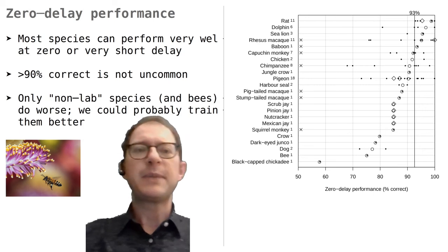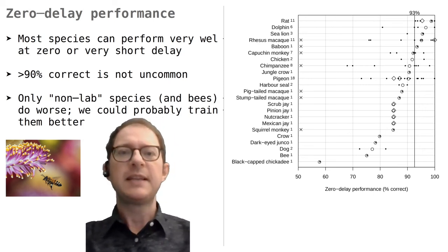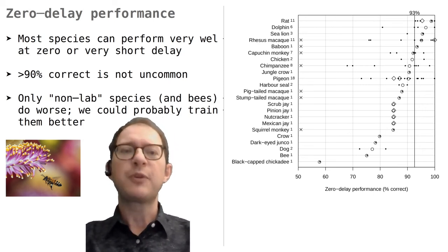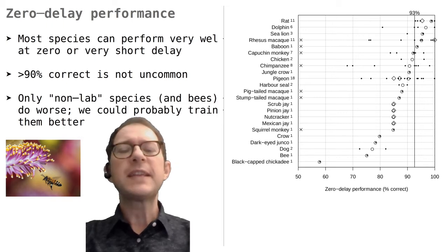But what does the graph say about differences between species? The species are ordered based on performance. We can see that rats are at the top, with more than 90% correct in every single experiment. Then we have dolphins, sea lions, rhesus monkeys, and so on. The poor bees are second last. So does this mean that rats are the stars of zero delay memory?